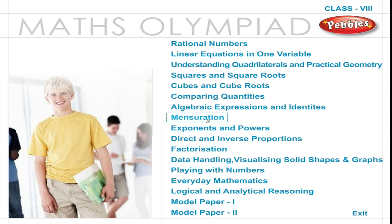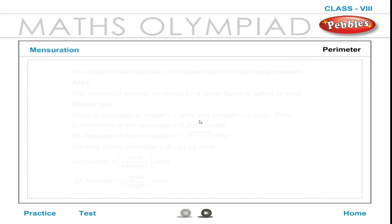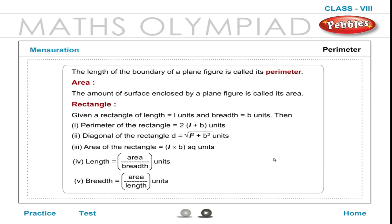Mensuration. Perimeter: The length of the boundary of a plane figure is called its perimeter. Area: The amount of surface enclosed by a plane figure is called its area. Rectangle: Given a rectangle of length L units and breadth B units.